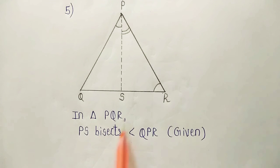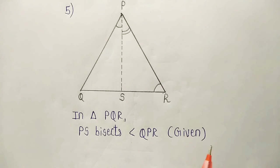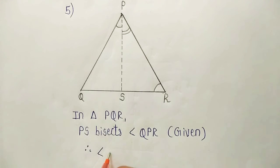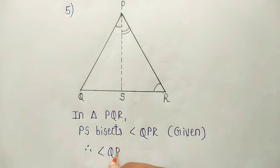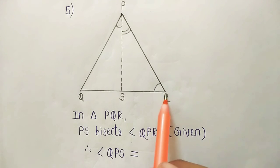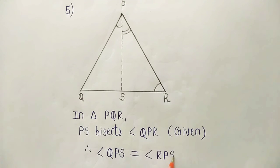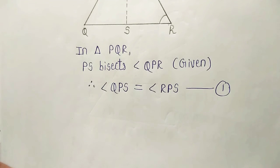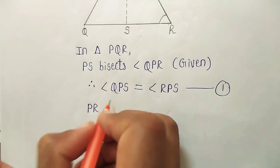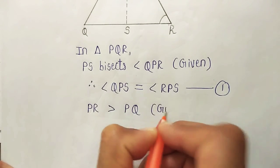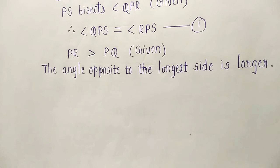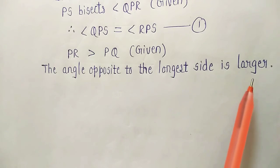In triangle PQR, PS bisects angle QPR, which is given. So when it is bisecting angle P, we will have two equal angles. Angle QPS will be equal to angle RPS, and this we write as equation 1. It is also given that PR is greater than PQ.